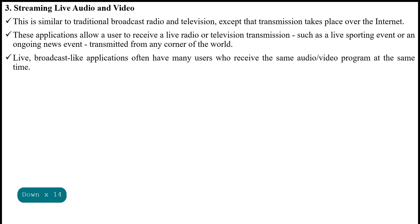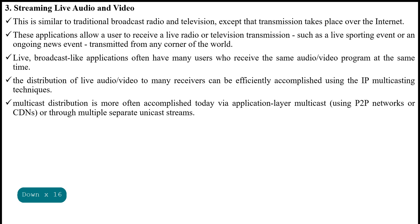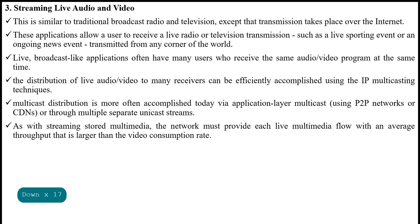Live broadcast-like applications often have many users who receive the same audio and video program at the same time. The distribution of live audio and video to many receivers can be efficiently accomplished using IP multicast. Multicast distribution is more often accomplished today via application-layer multicast, or using P2P networks, CDN, or multiple separate unicast streams. As with streaming stored multimedia, the network must provide each live multimedia flow with an average throughput larger than the video consumption rate.